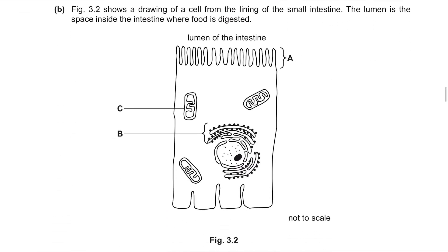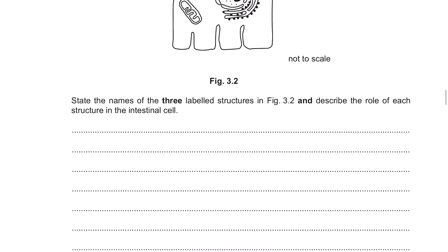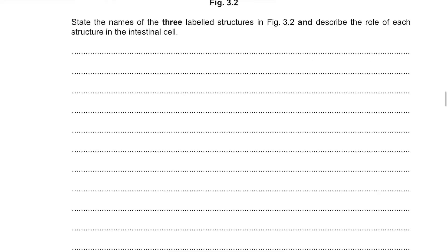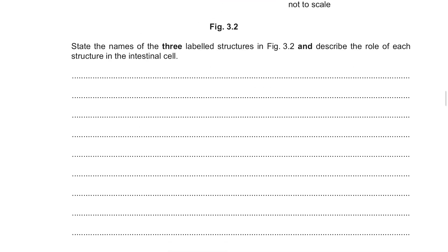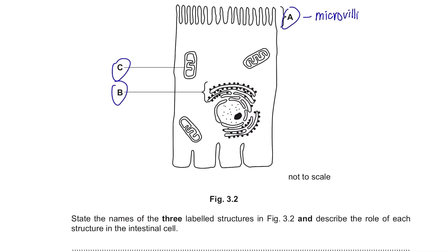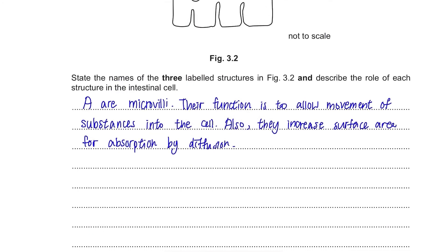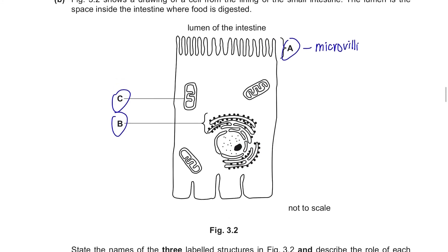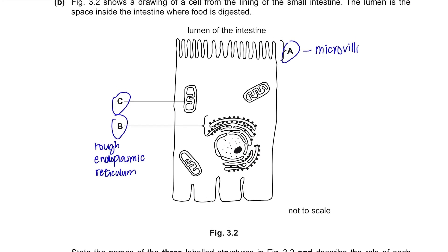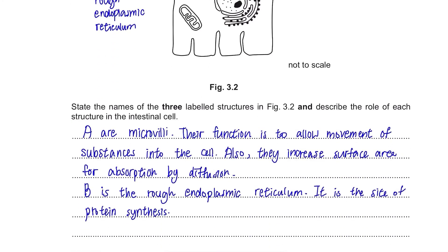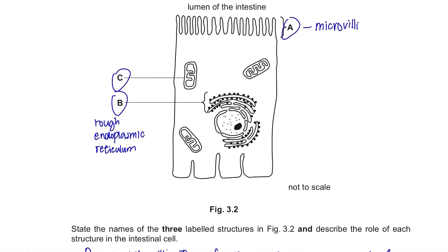Figure 3.2 shows a drawing of a cell from the lining of the small intestine. The lumen is the space inside the intestine where food is digested. State the name of the three labelled structures and describe the role of each in the intestinal cell. Structure A is microvilli — their function is to allow movement of substances into the cell and to increase surface area for absorption by diffusion. Structure B is the rough endoplasmic reticulum — it is the site of protein synthesis. Structure C is a mitochondrion — it is where aerobic respiration occurs and energy is produced.